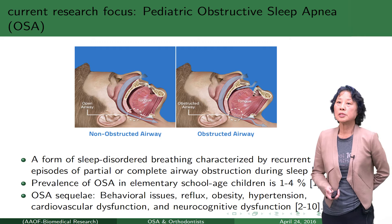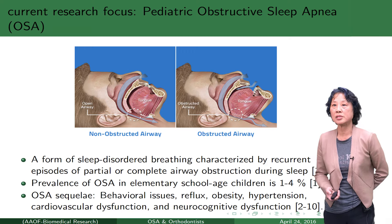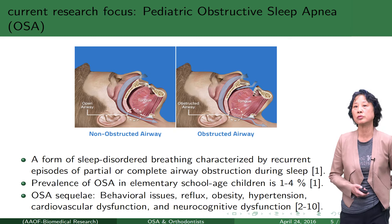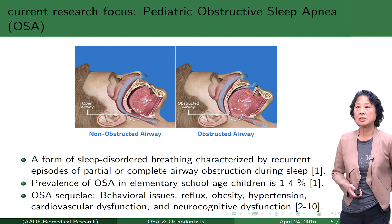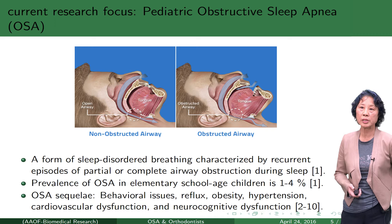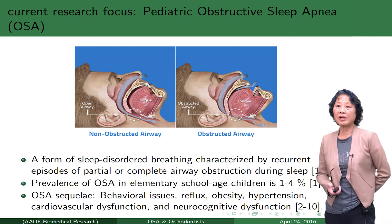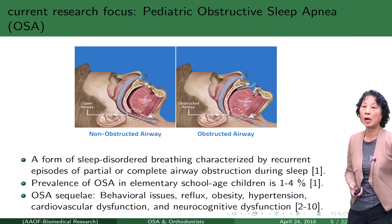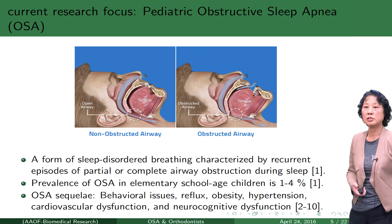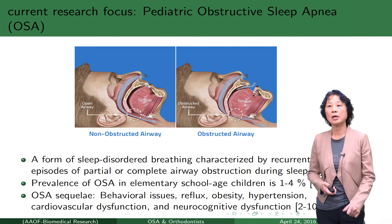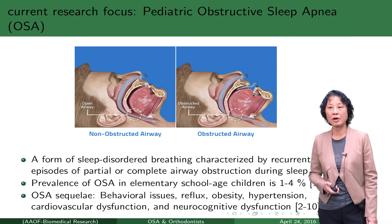This high-dimensional complex data analysis was motivated by the OSA study. Let me briefly explain what OSA is, particularly in children. Obstructive sleep apnea is a form of sleep disorder characterized by partial or complete airway obstructions while people are sleeping. It turns out the prevalence of OSA in school children is one to four percent, which is quite high. If OSA is not treated on time, the consequences could be very detrimental — for example, behavioral issues, reflux, obesity, hypertension, cardiovascular and neurocognitive dysfunction, to name just a few.